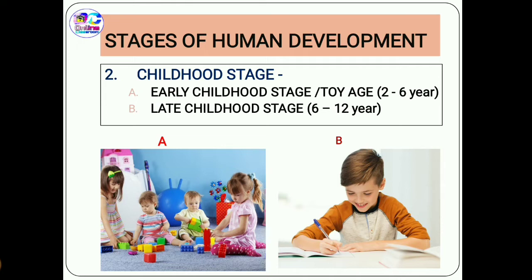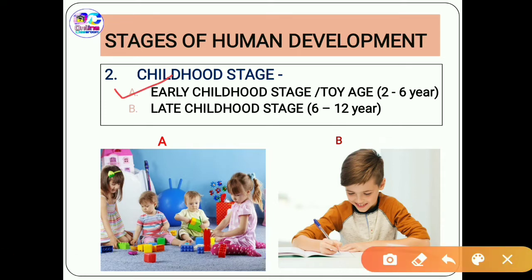The next is the childhood stage, which has been further classified into two: the early childhood stage, or the toy age, which is from two to six years, and the later childhood stage from six to twelve years. In early childhood, it is a time when there is tremendous growth across all areas of development.